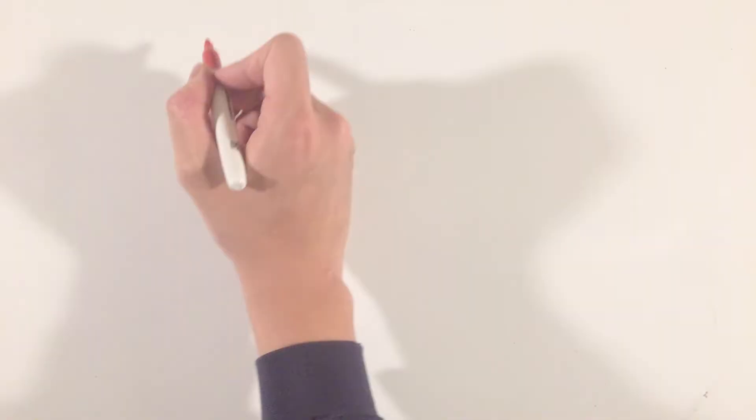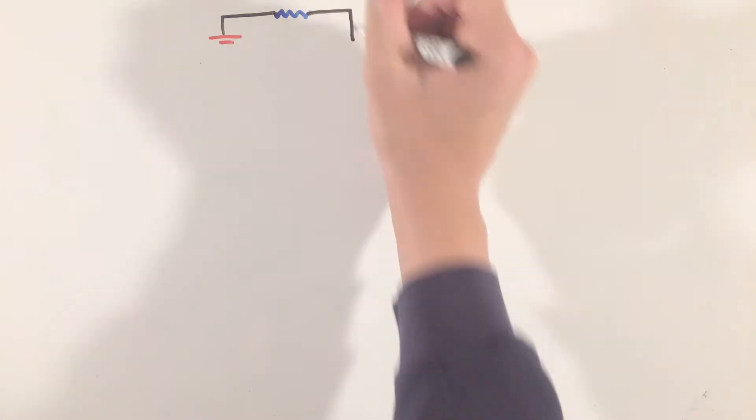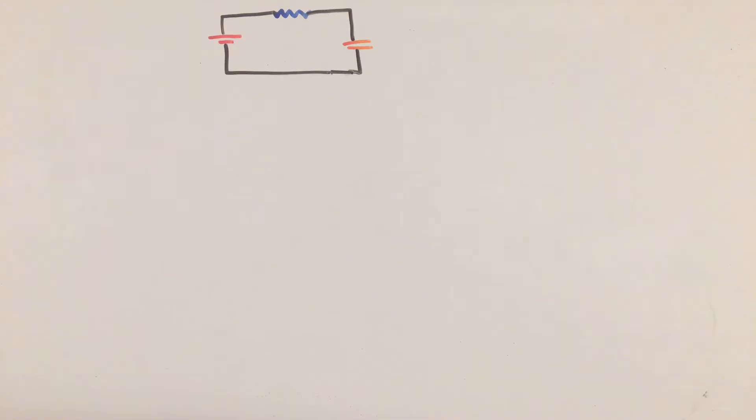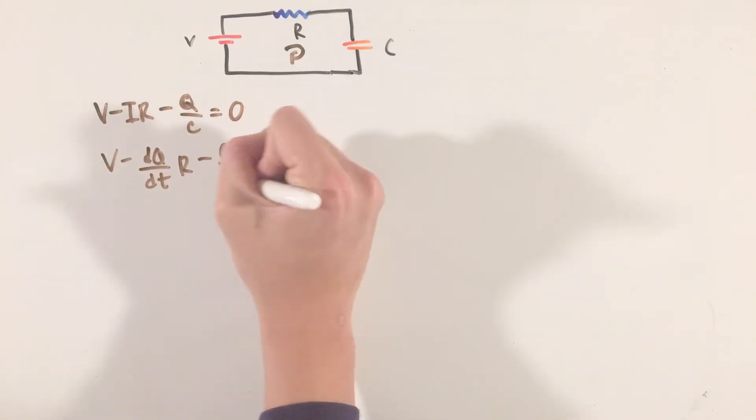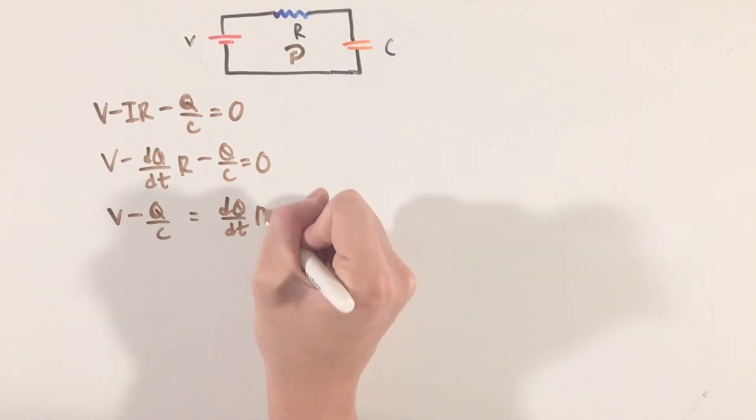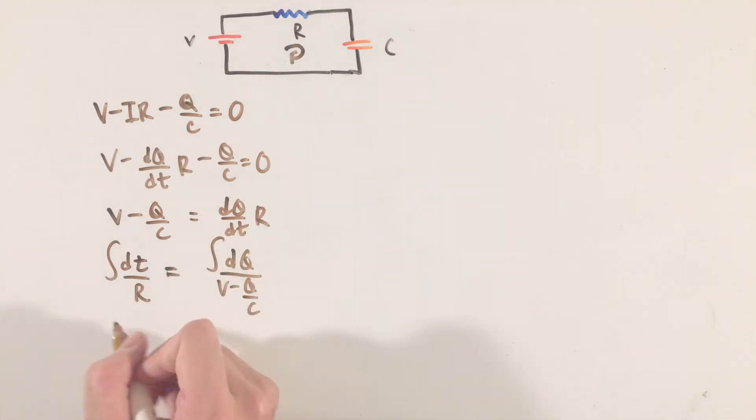For example, let's take a look at the circuit the instant the switch is closed, or what's known as a charging capacitor RC circuit situation. In this case, we can use Kirchhoff's loop rule, remembering that the voltage across a resistor is current times resistance, and through a capacitor is the charge divided by the capacitance. Using our new derivative definition of current, what we're left with is actually a fairly simple differential equation.